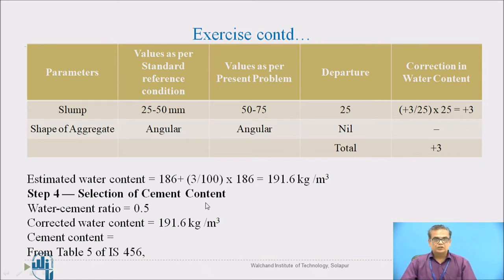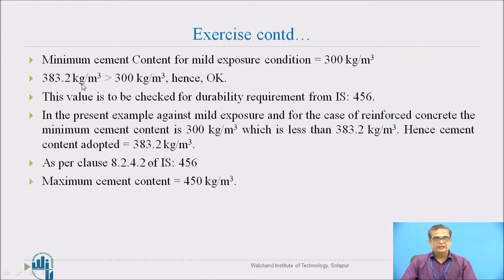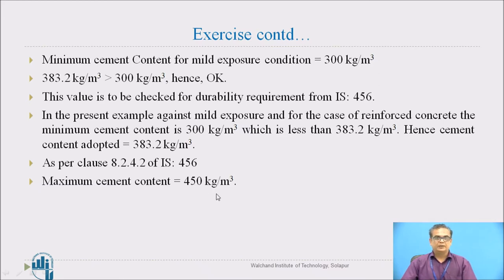Selection of cement content: the minimum cement content given by IS is 300 kg per cubic meter. By calculation, we get 383.2 kg per cubic meter, which is greater than 300, so it is acceptable. The maximum cement content is 450 kg per cubic meter, which is the code limitation.